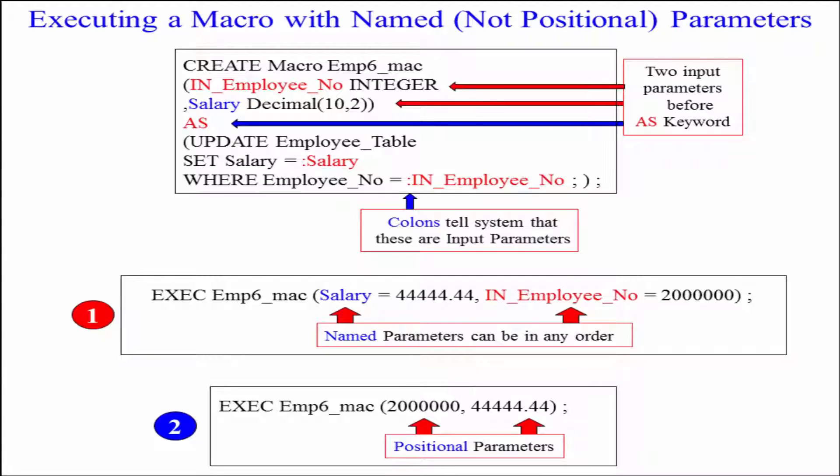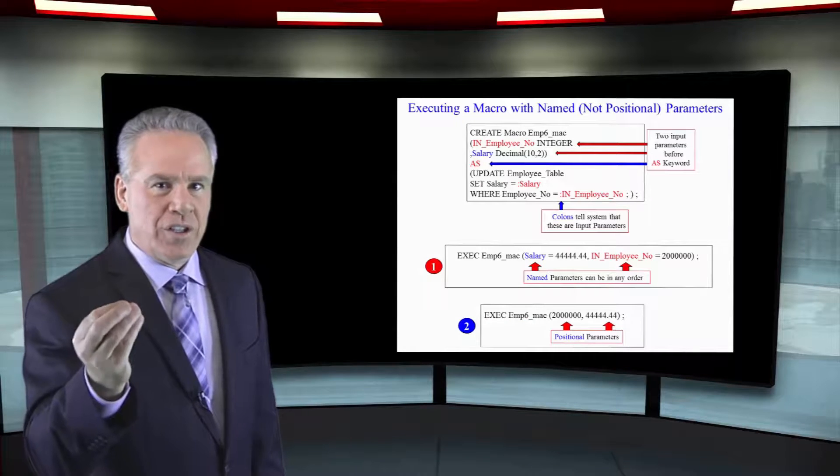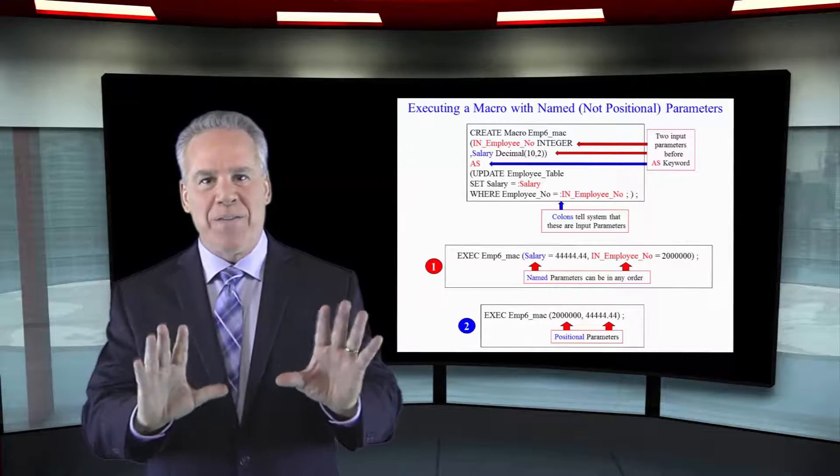We know that the first parameter is IN_Employee_No and the second parameter is salary so the positioning must be perfect. So we say I want to execute the macro, employee number is two million and the salary is next. So if they're in the perfect position that's going to work just fine.